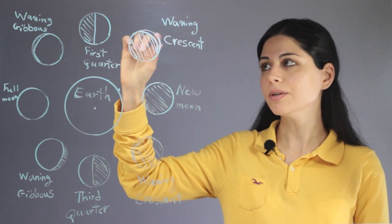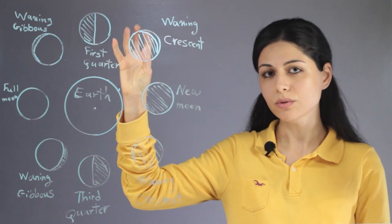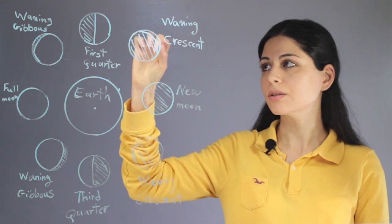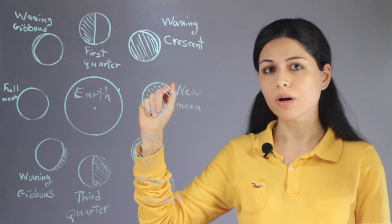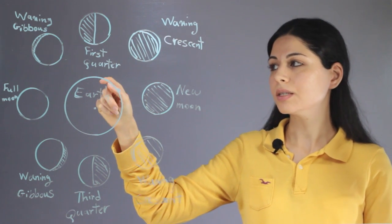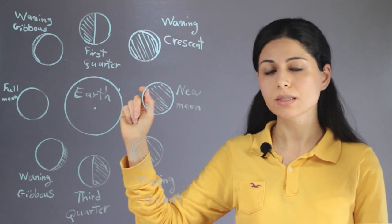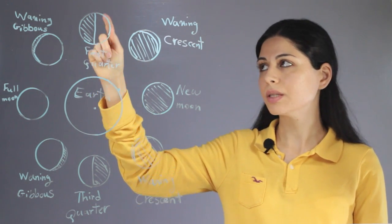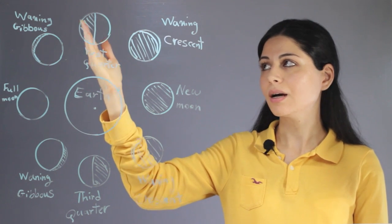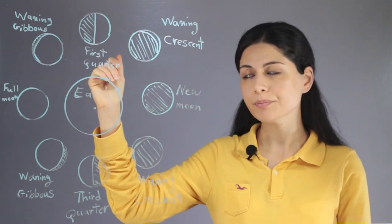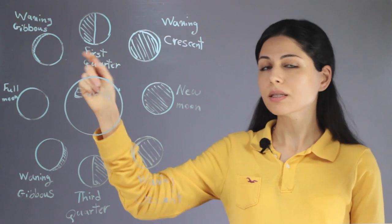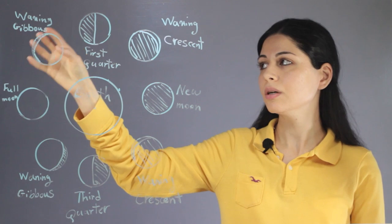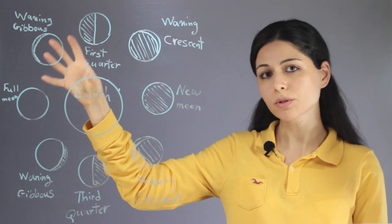The next phase is waxing crescent. In the waxing crescent, most of the moon is dark, but we can see a very narrow crescent of the moon in the sky, and this crescent part is bright. In the third phase, the first quarter, the moon is half dark and half bright, so in the sky we see half of the moon which is bright.